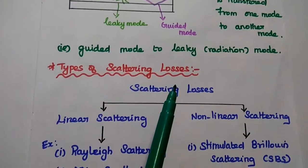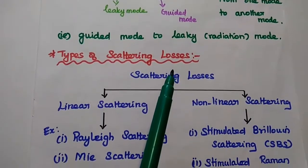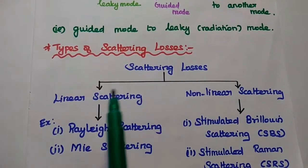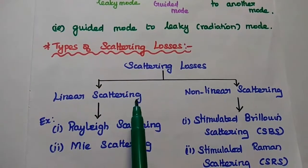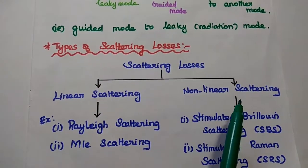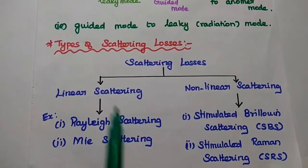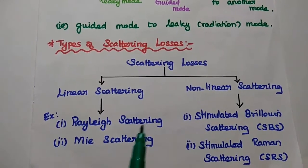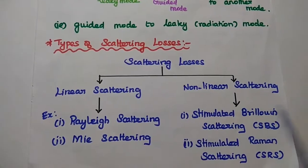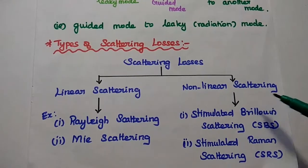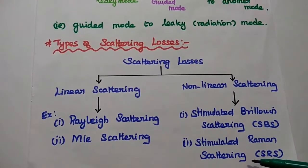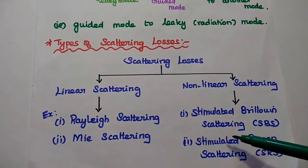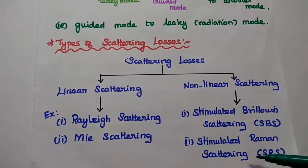There are different types of scattering losses. The major classification is linear scattering and non-linear scattering. There are two types of linear scattering: Rayleigh scattering and Mie scattering. In non-linear scattering, there are also two types: stimulated Brillouin scattering and stimulated Raman scattering.